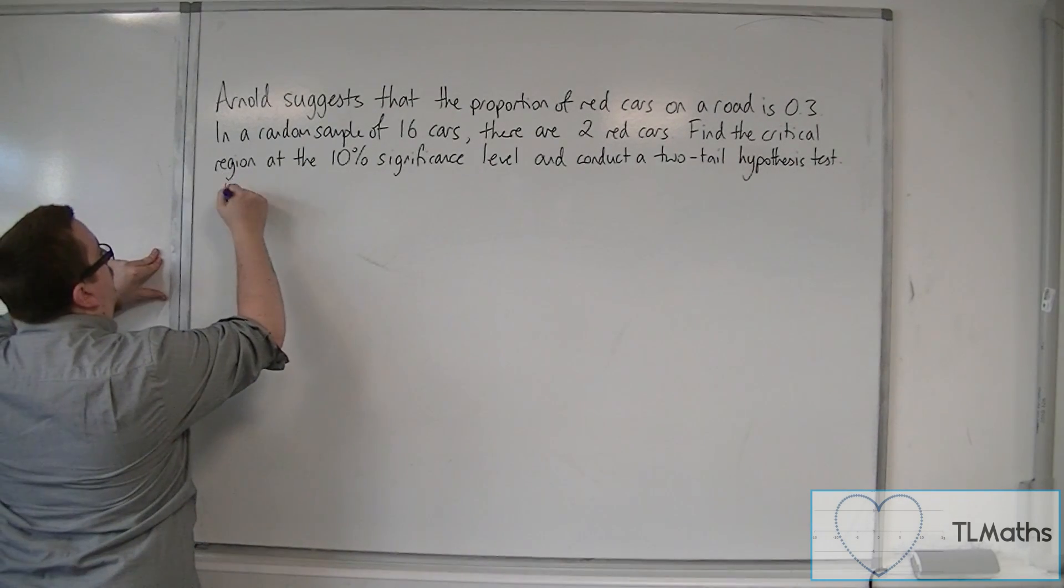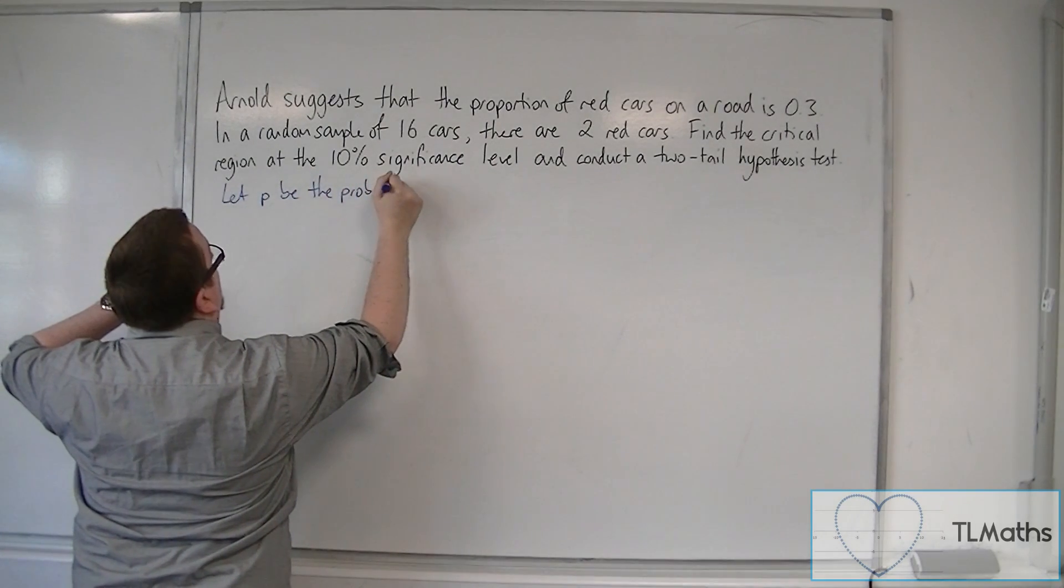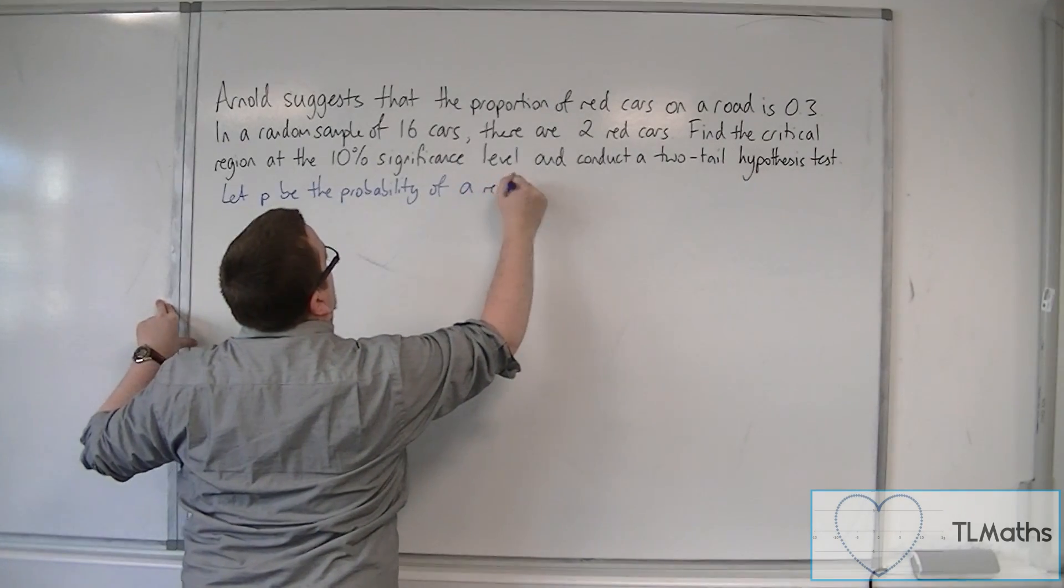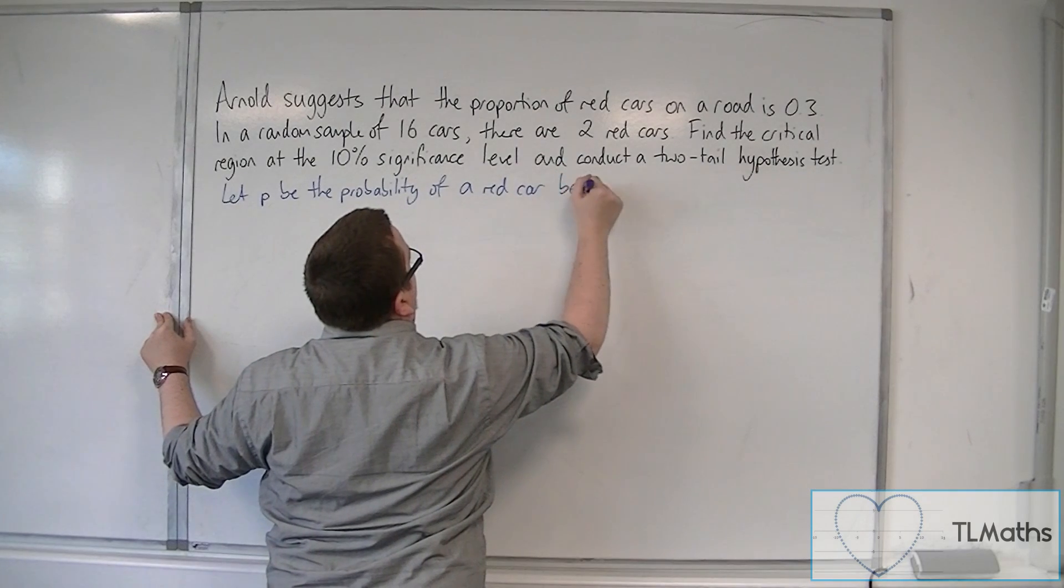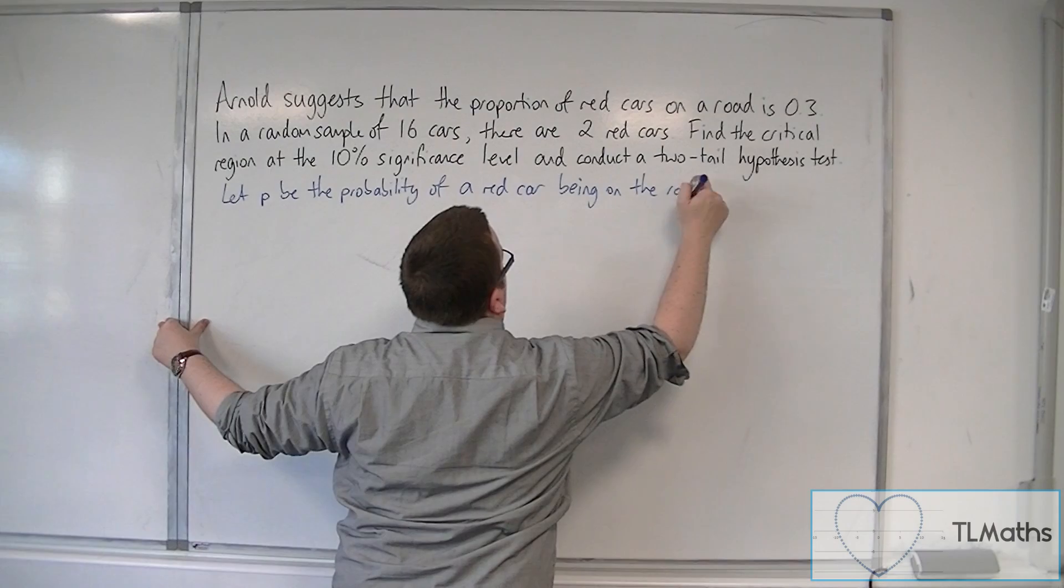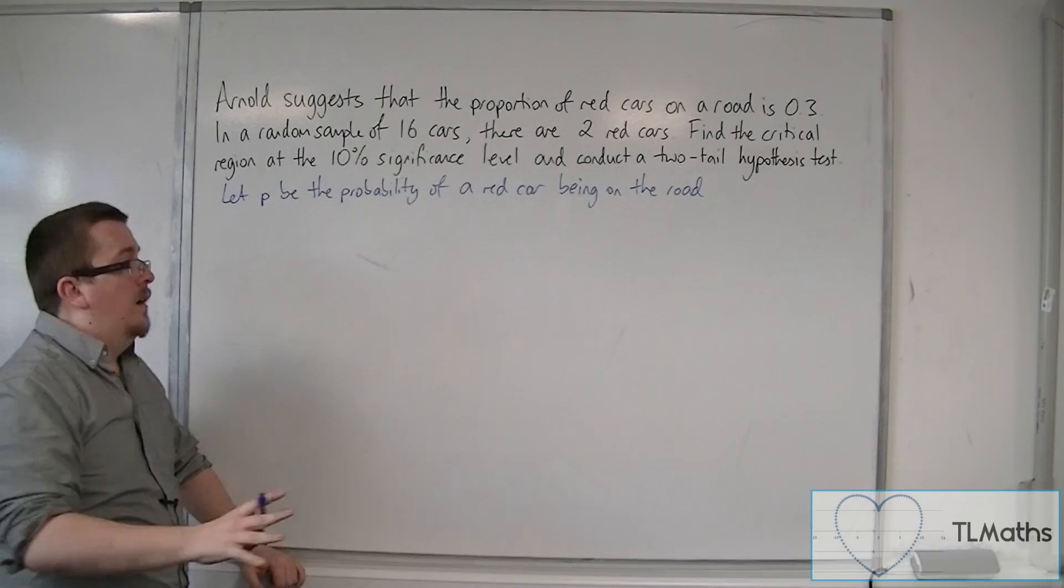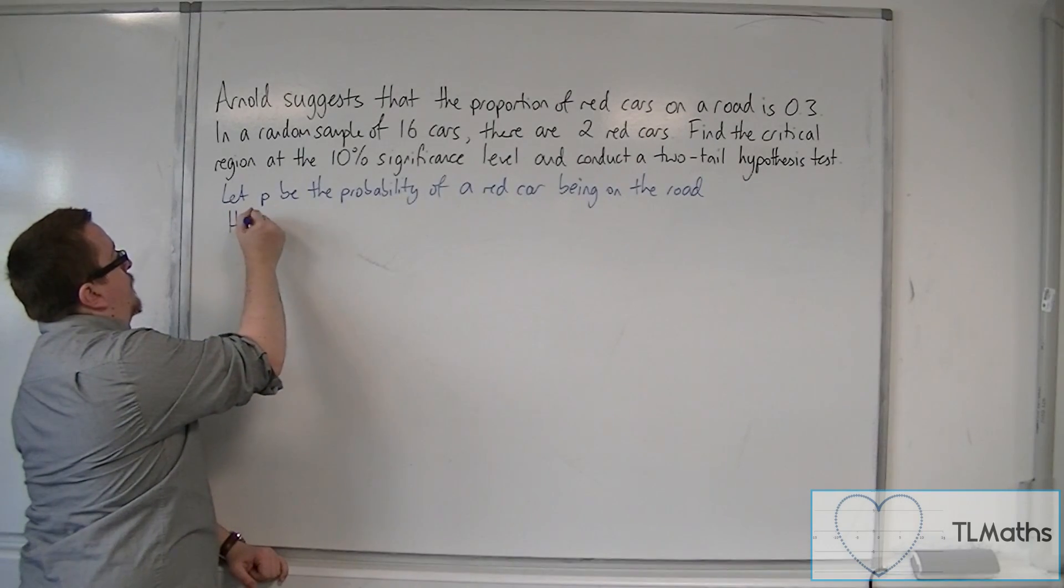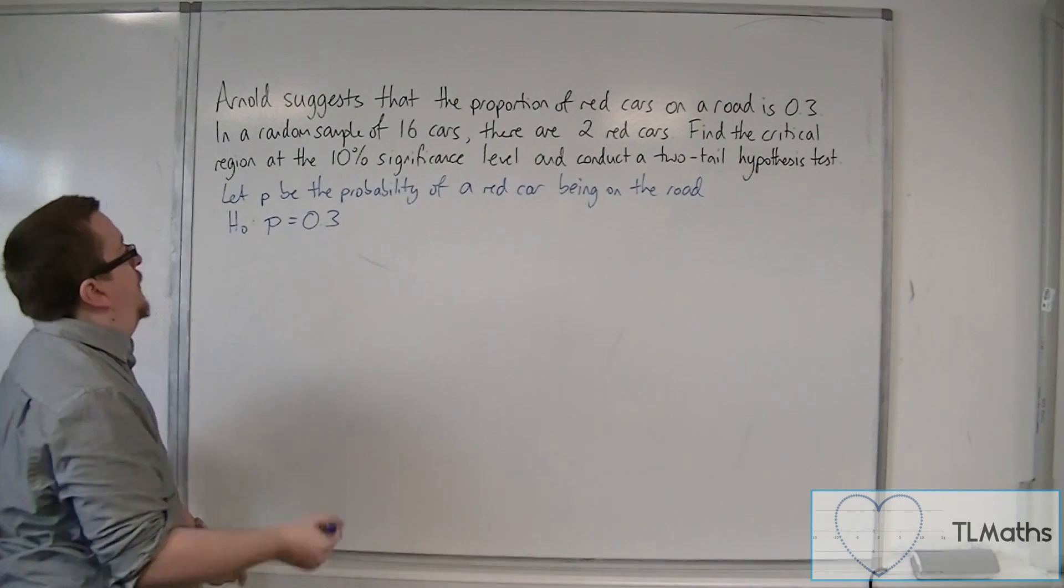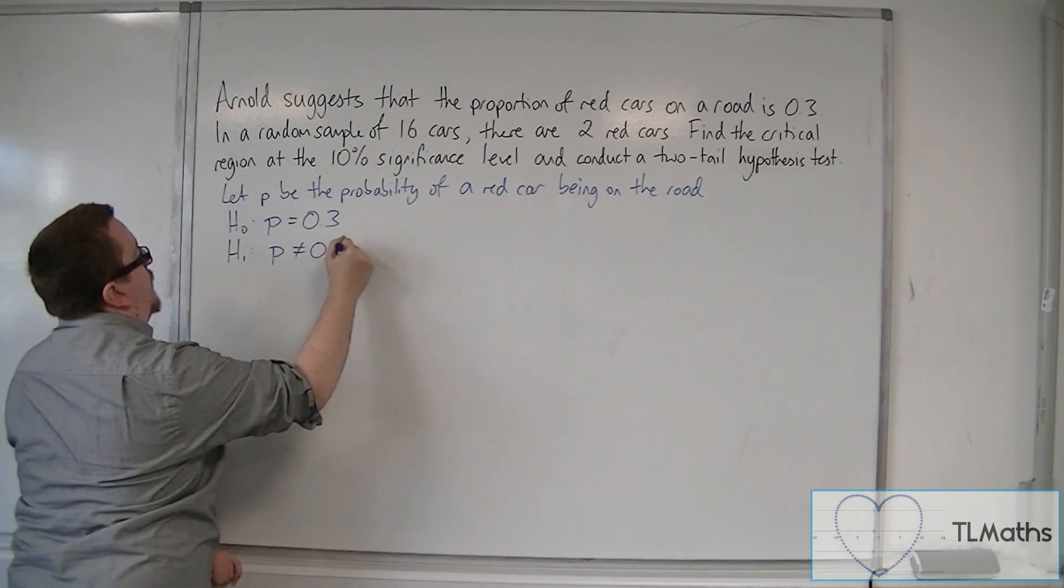So let P be the probability of a red car being on the road. The null hypothesis, H0, is P equals 0.3, as Arnold suggests. The alternative hypothesis is that P is not 0.3.